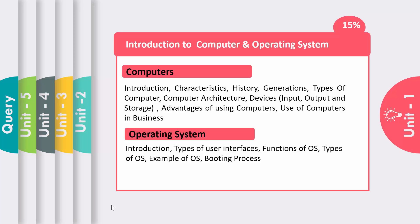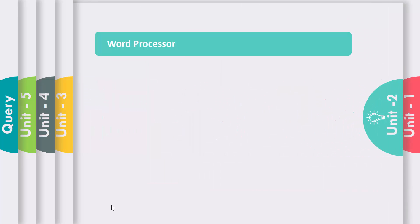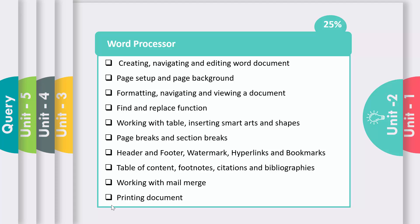Then the booting process — when we start the computer, what is the process? I explain this process here. Unit 1 contains introduction to computer as well as operating system, and the whole unit has a weightage of 15%. Now Unit Number 2 is Word Processor, and it has a weightage of 25%.